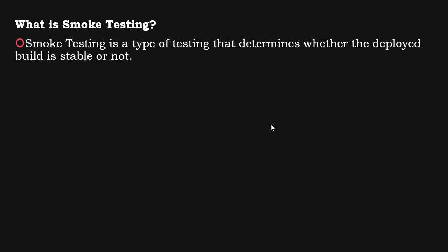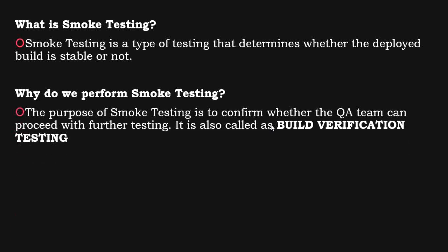First, let's understand what is smoke testing. Smoke testing is a type of testing that determines whether the deployed build is stable or not. A build is essentially checking whether a new feature is working fine or not. The purpose of smoke testing is to confirm whether the QA team can proceed with further testing. It is also known as build verification testing.